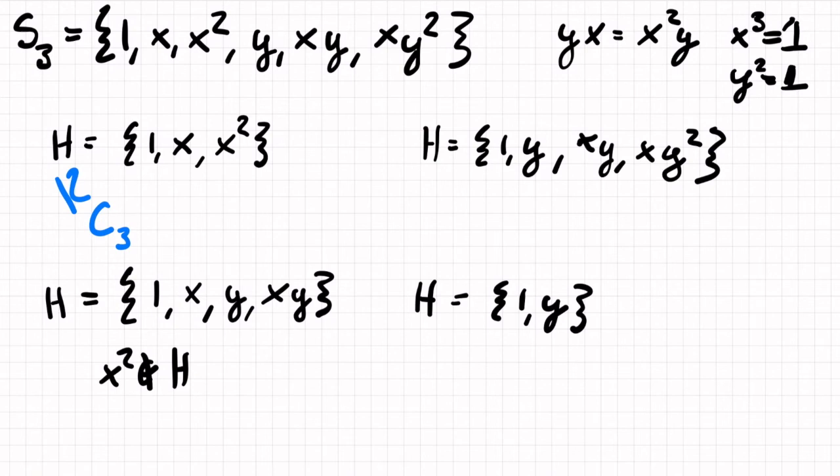But we still struggle with closure because if we write xy times y, well, y squared is one. As noted before, it's its own inverse. So we just have x and x is not in our subset. So this is not a subgroup. This one was not a subgroup.